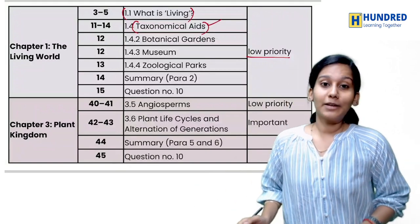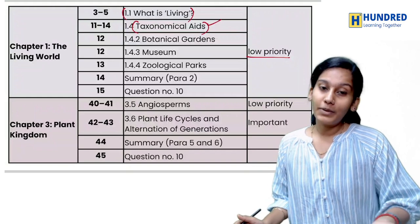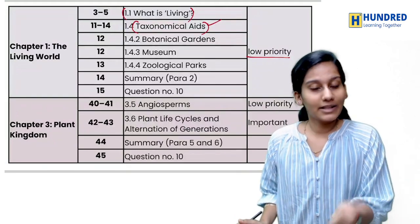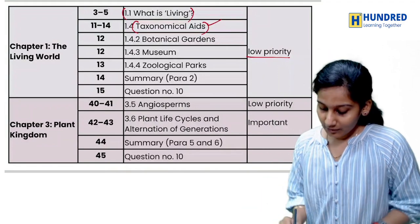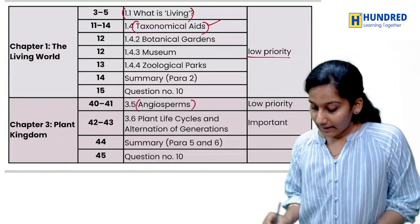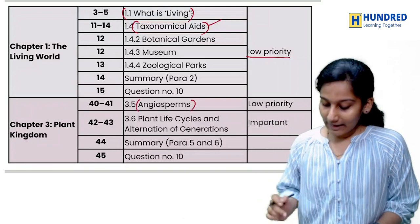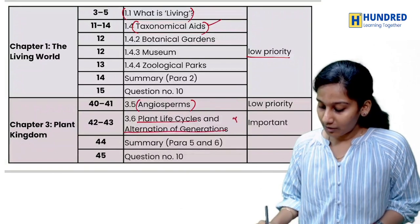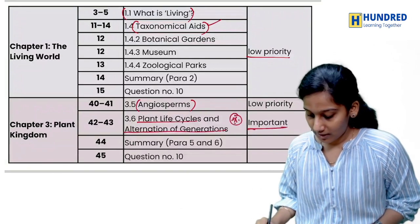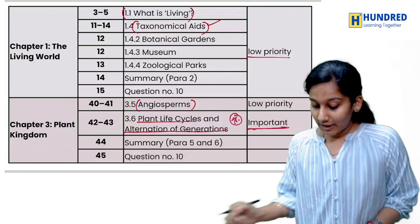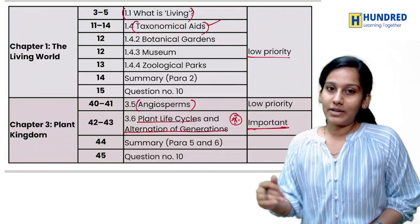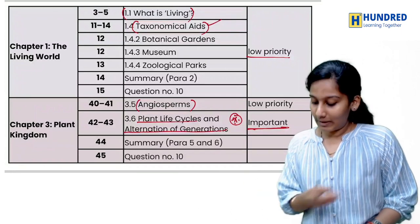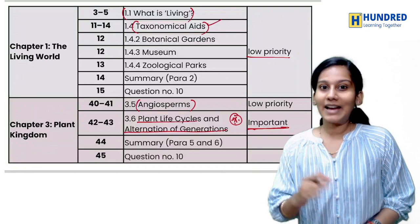Next, Plant Kingdom — there are some topics of low importance and some very important topics, so we have to read all the important ones. Algae and Spores are of low priority. What is very important in Plant Kingdom is the plant life cycle — Alternation of Generations — which is very important. There are CBSE board questions on this, so make sure to read it.